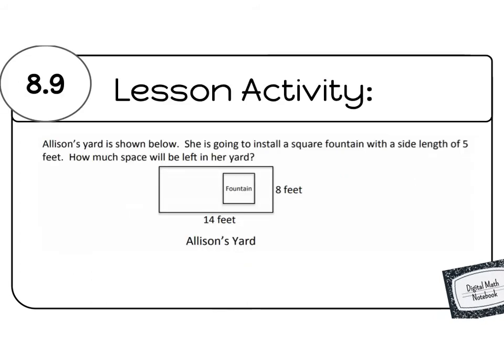All right, friends. In this lesson activity, we also have some problems where we're going to be needing to look at the difference. This is your lesson activity. Let's start it off together. Allison's yard is shown below. She is going to install a square fountain with a side length of 5 feet. How much space will be left in her yard?